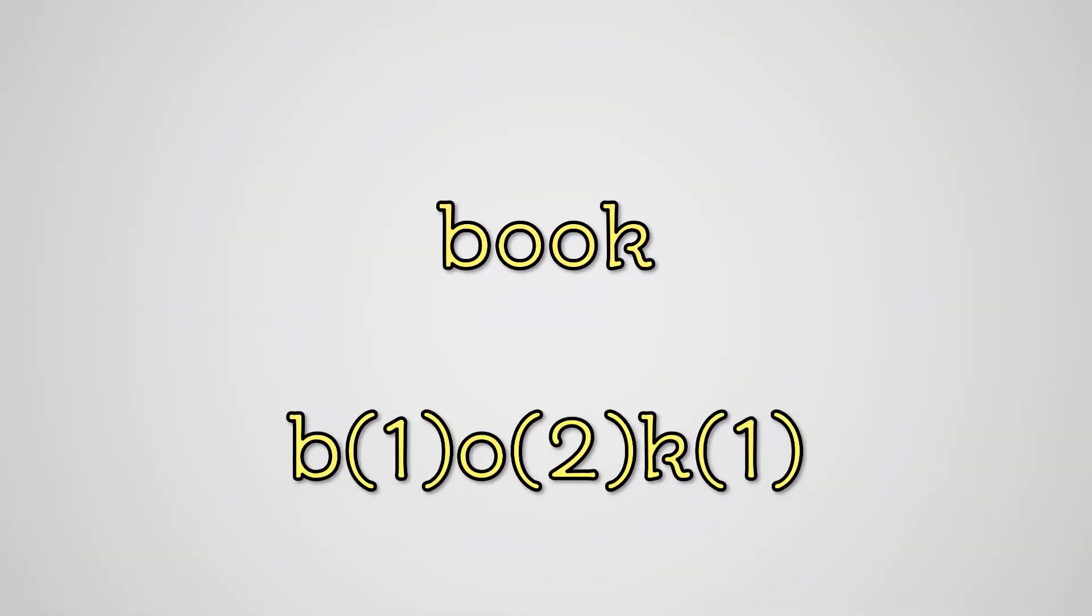Let's look at the word book. This would give a frequency value pair of B1, O2, K1, which is of course bigger than the original word.